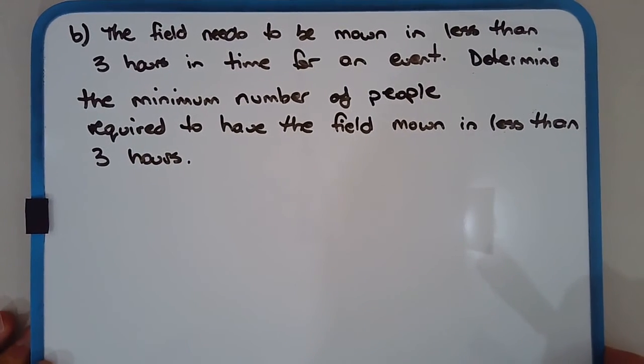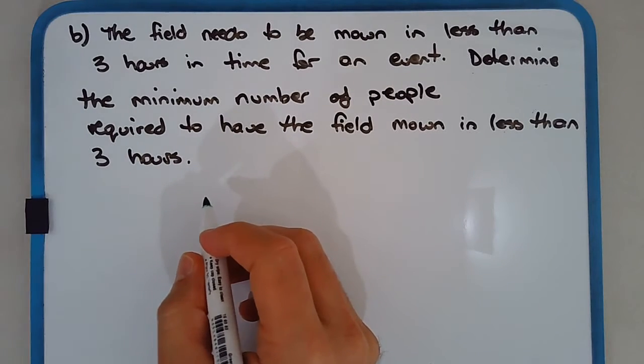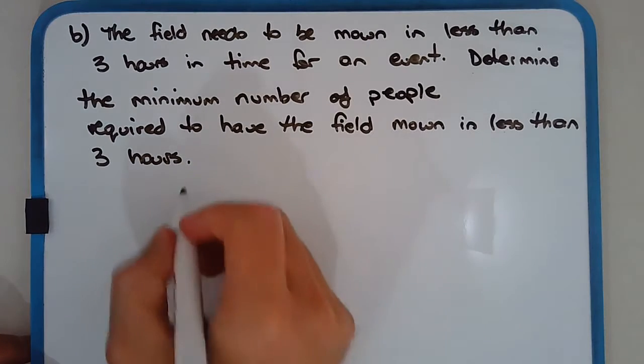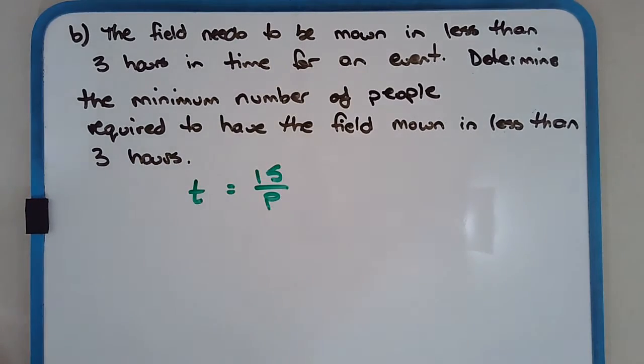So part B, the field needs to be mown in less than three hours in time for an event. So determine the minimum number of people required to have the field mown in less than that time, in less than three hours. So let's use the equation. We have to use the equation to the converse of that and maybe rearrange it.